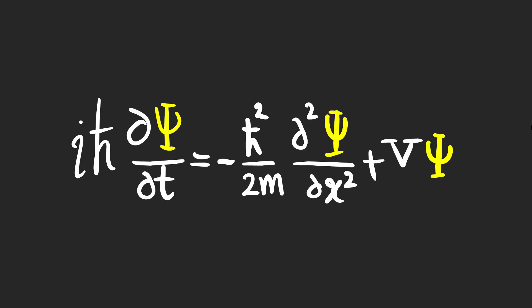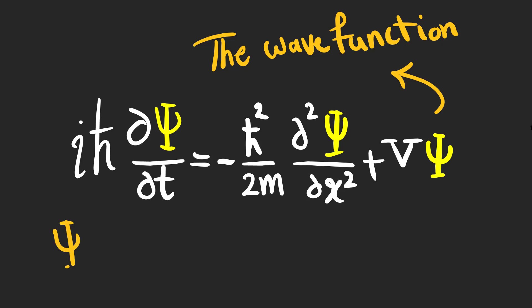This is the Schrödinger equation which we use to describe a particle's behavior in quantum mechanics. The yellow character is called the wave function which contains all the information we need to talk about the particle. The wave function is dependent on position and time.